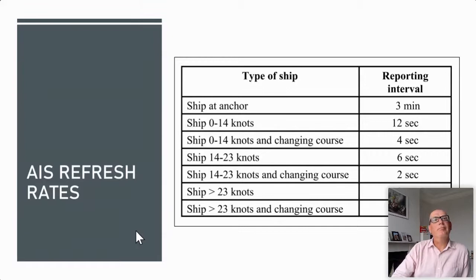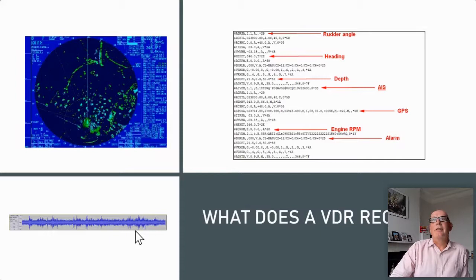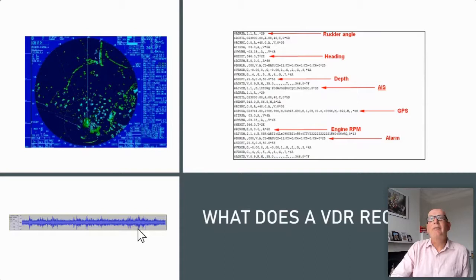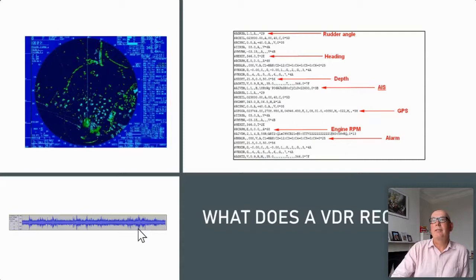What does VDR record? The benefits of the VDR are that we get a radar picture recorded, so we can see the radar images that would be provided on board at the time. We get the NMEA data, which gives significantly more information than AIS, including rudder angle and heading. You also get depth from the echo sounder, AIS from your own vessel plus other vessels in the area, as well as engine data, alarms, and on some vessels also watertight integrity and fire alarm data.